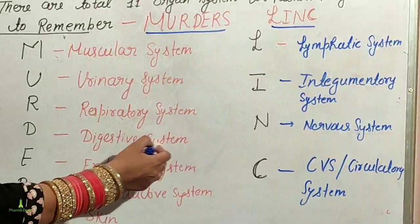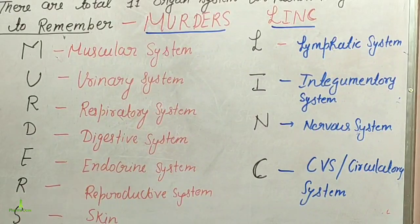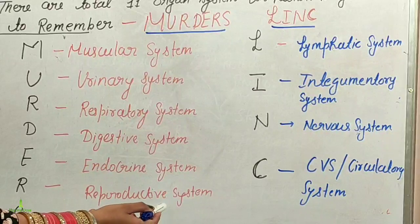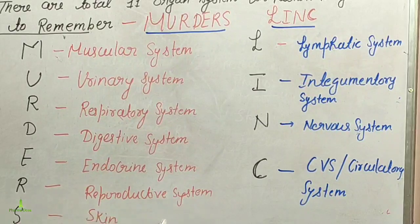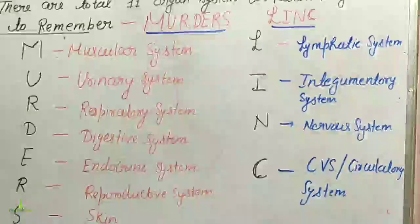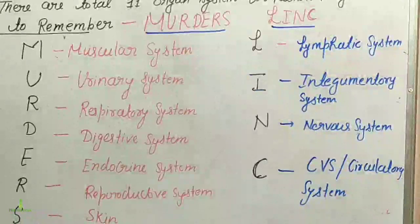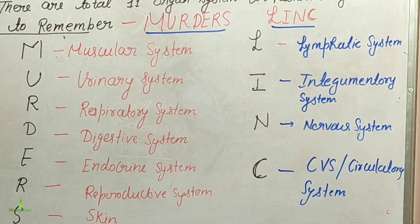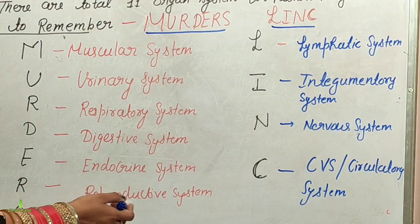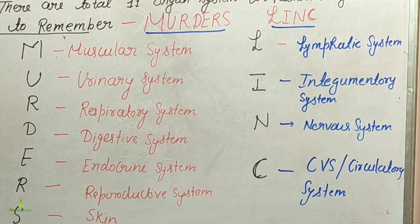The endocrine system involves hormone production and glands. The reproductive system deals with reproduction in males and females — sperm and egg production, and structures such as the testes and ovaries — all of which we will discuss in detail.